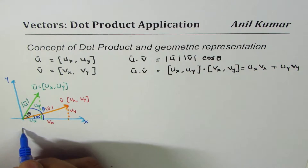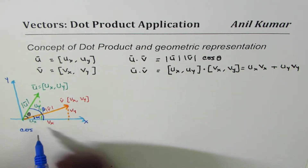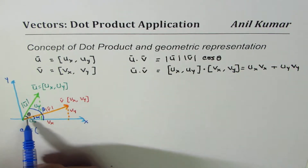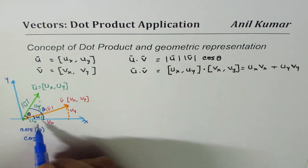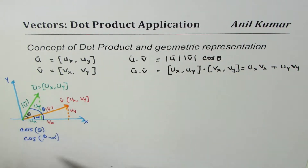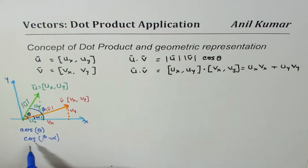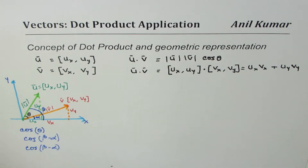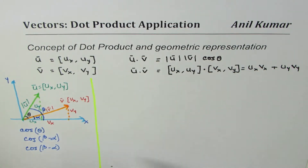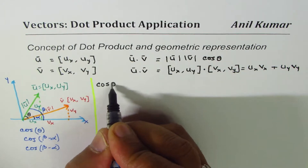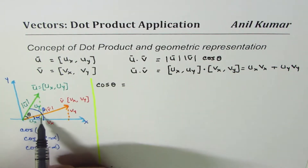In this derivation I'm also going to use cosine of theta. Cos theta — since theta is the angle between u and v — really means cos of (beta minus alpha). So cos(beta minus alpha) is angle theta. Now what is the expansion of cos(beta minus alpha)?